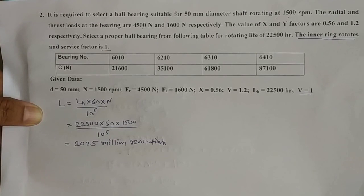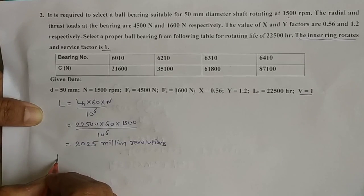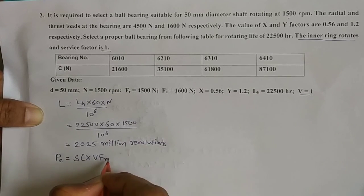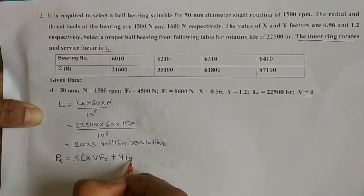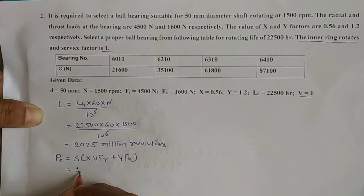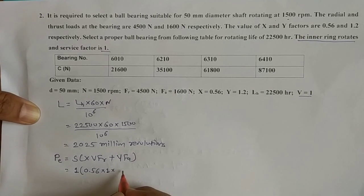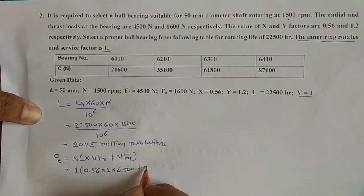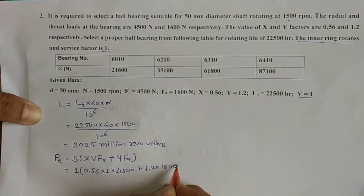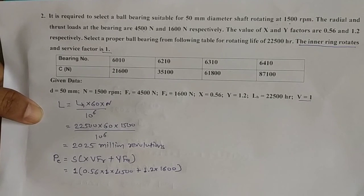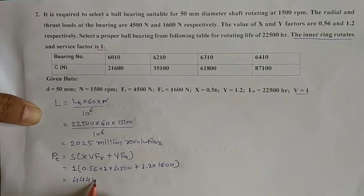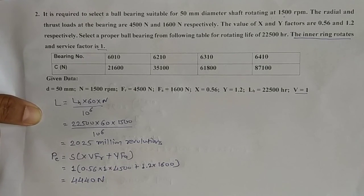Now let us find the equivalent bearing load. PE = S × X × V × FR + Y × FA. Service factor S = 1, X = 0.56, V = 1, FR = 4500, Y = 1.2, FA = 1600. Therefore the equivalent bearing load PE is equal to 4440 Newton.